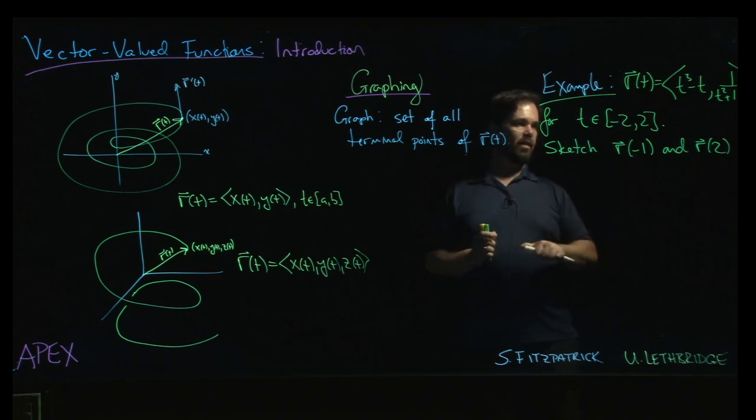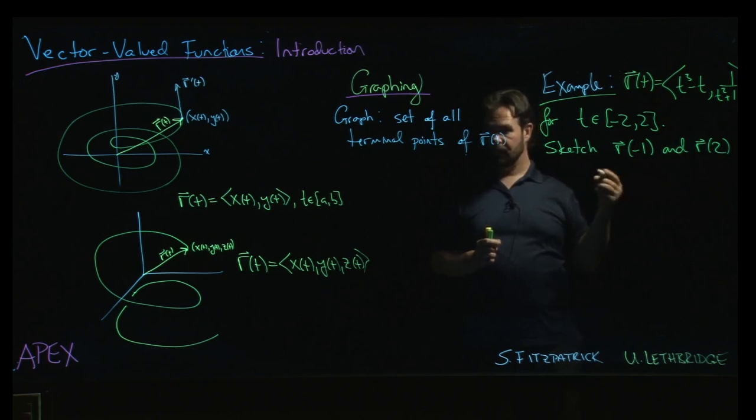We've got this vector-valued function defined on some closed interval domain. We just want to evaluate the function at these two points and sketch the vectors.